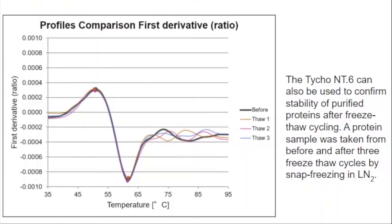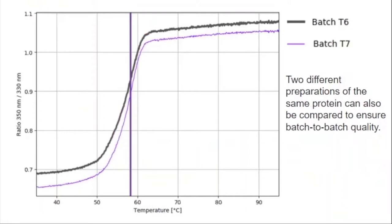Another important use is ensuring that each batch of protein we make for a client or for our own research is pretty identical — that the quality is equal between batches. The TYCO is quite useful for that as well. In this experiment, I ran samples from protein batch T6 and protein batch T7 on the TYCO, with T6 being the black line and T7 being the blue line. The Ti of those two samples are perfectly aligned — they unfold at the same temperature. There are some differences in the initial ratios, most likely due to the difference in concentration between the two samples, but we have assurance that the quality of our samples is very similar.